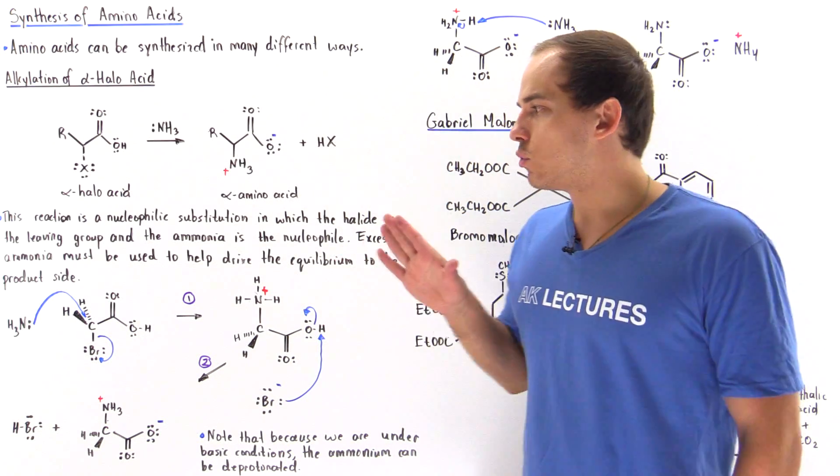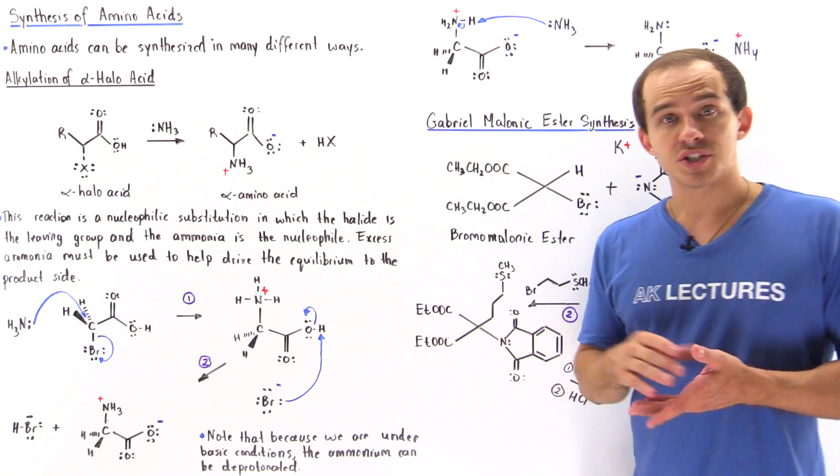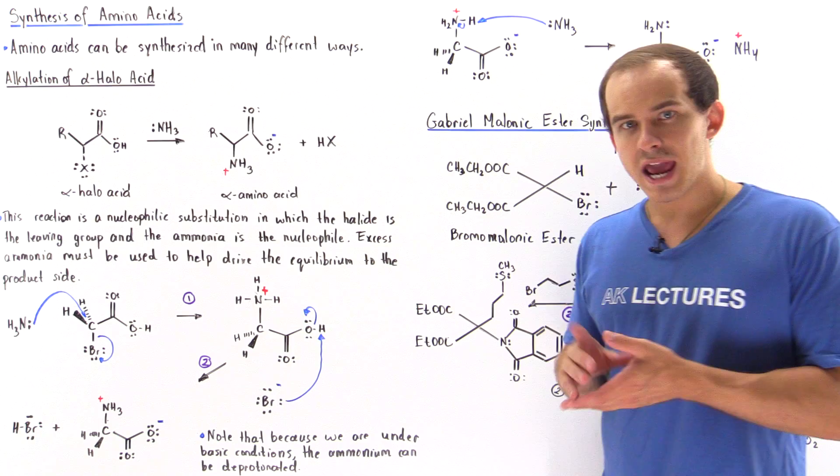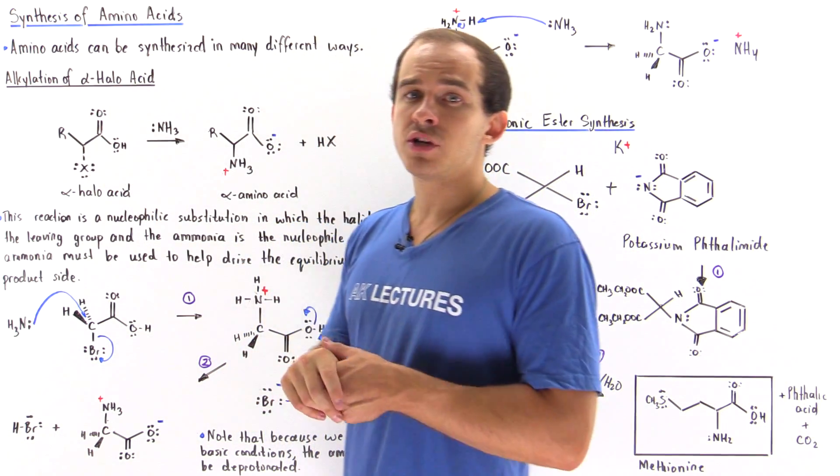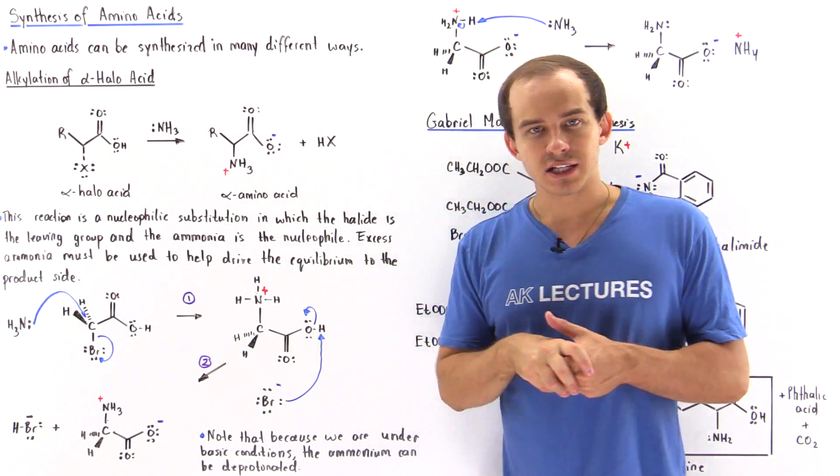So let's take a look at the following two reactions that allow us a way to synthesize, to create our amino acids. And let's begin with the alkylation of the alpha-haloacid.